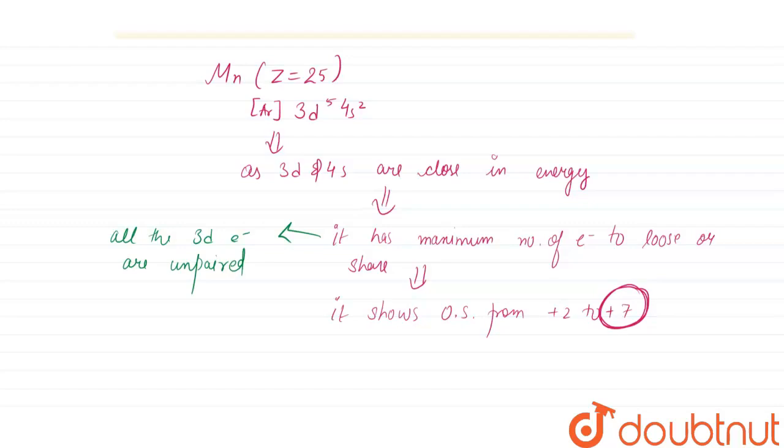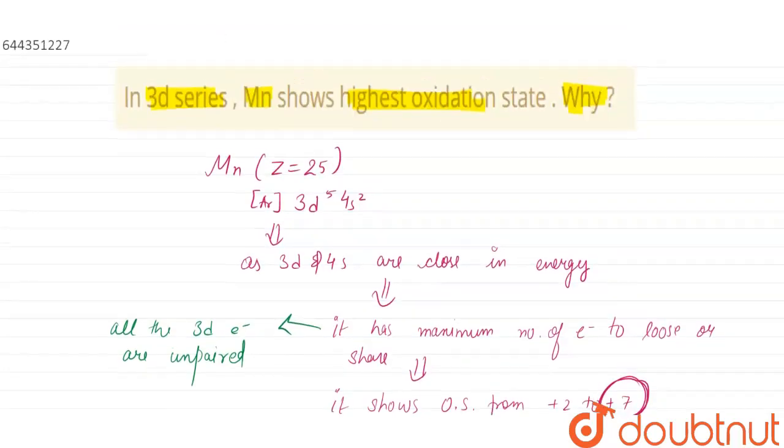The reason for manganese showing maximum oxidation state is that its configuration is [Ar] 3d⁵ 4s², where 3d and 4s are close in energy and has maximum number of electrons to lose or share. In 3d all the electrons are unpaired, due to which it can easily form bonds and shows maximum oxidation state, that is +7 oxidation state. Thank you.